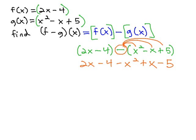Last thing to do to simplify would be to combine like terms. We have a -x², 2x plus x, that's plus 3x, and -4, -5 is -9.